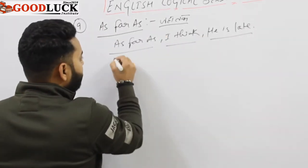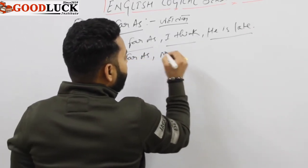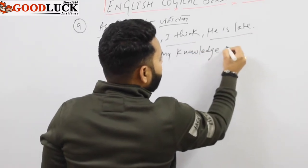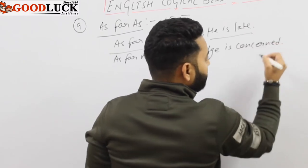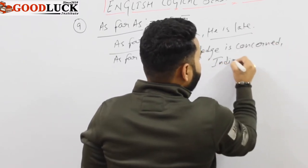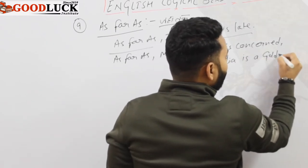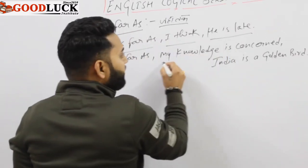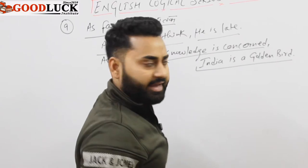Another example: 'As far as my knowledge is concerned, India is a golden bird.' Means, jahaan tak meri knowledge ka sawaal hai, India ek golden bird hai — as far as my knowledge is concerned, India is a golden bird.